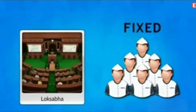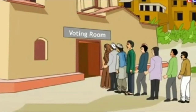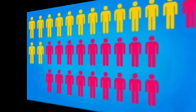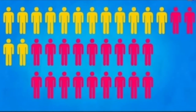Members of the Lok Sabha are directly elected by the people. The number of members in the House is fixed. Elections to the Lok Sabha are held at regular intervals. All political parties contest these elections. The party which gets more than half of the seats is considered the majority party, and the majority party forms the government.